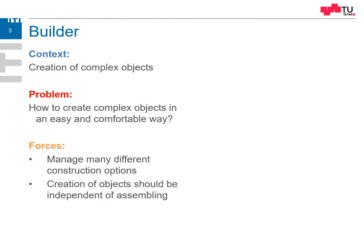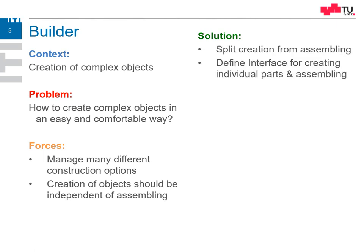The creation of objects should be independent of the assembling. So we want to configure how the object is created but we want to split this configuration from the actual assembling. The solution is to split this and to define an interface so that we can add individual parts and then have a common method for assembling. And then of course we have to implement the individual methods for the parts.